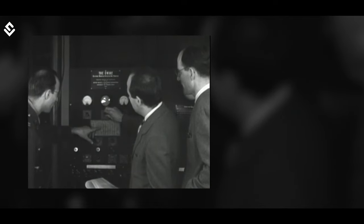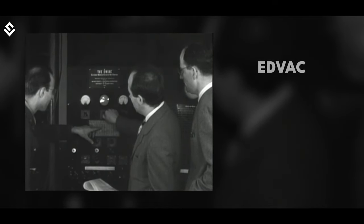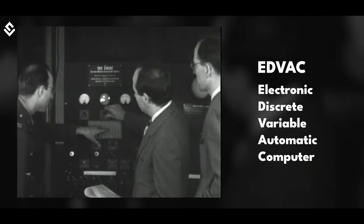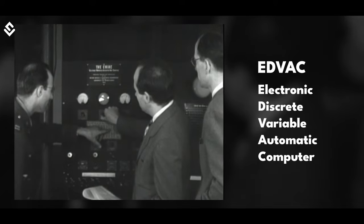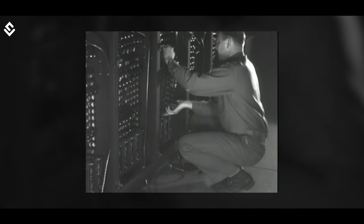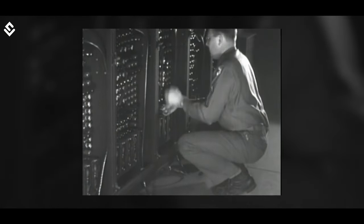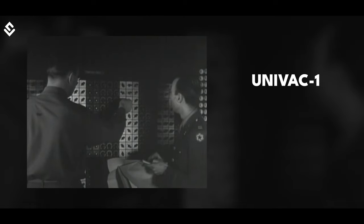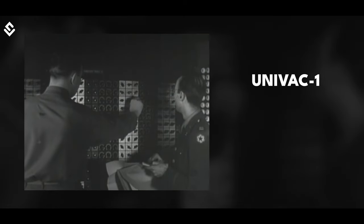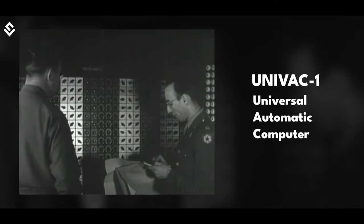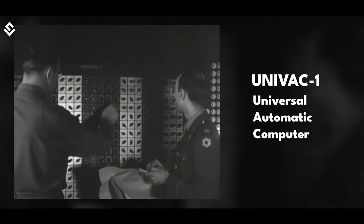ENIAC was succeeded by EDVAC — Electronic Discrete Variable Automatic Computer — which also had a storage facility and could store a program for the automatic functioning of the computer. UNIVAC 1, the Universal Automatic Computer, became the most popular digital machine of that time.